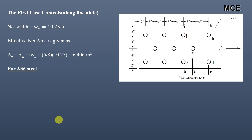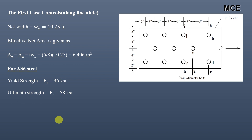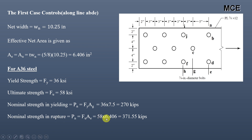For A36 steel, the yield strength F_y = 36 ksi and the ultimate strength F_u = 58 ksi. The nominal strength in yielding is F_y × A_g = 36 × 7.5 = 270 kips. The nominal strength in rupture is F_u × A_e = 58 × 6.406 = 371.55 kips.